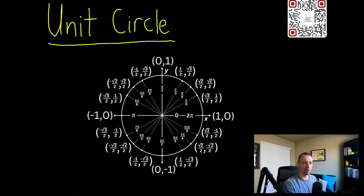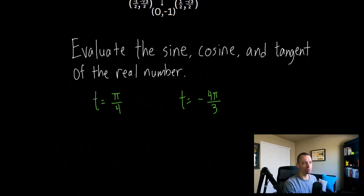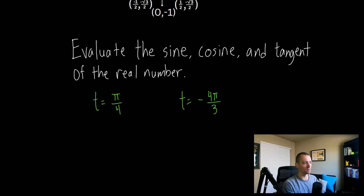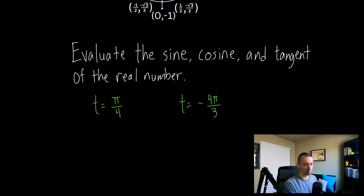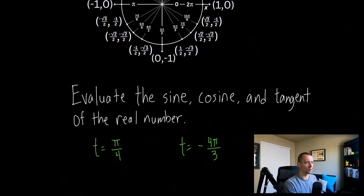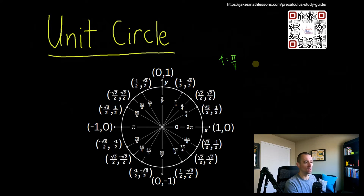The unit circle is very closely tied with sine, cosine, and tangent. So let's say you had a problem like this, where they tell you to evaluate the sine, cosine, and tangent of specific values. We're going to do t equals pi over four, and then t equals negative four pi over three, and we're going to use the unit circle to do it. So for the first one, t equals pi over four — we need to find the sine, the cosine, and the tangent of this value.